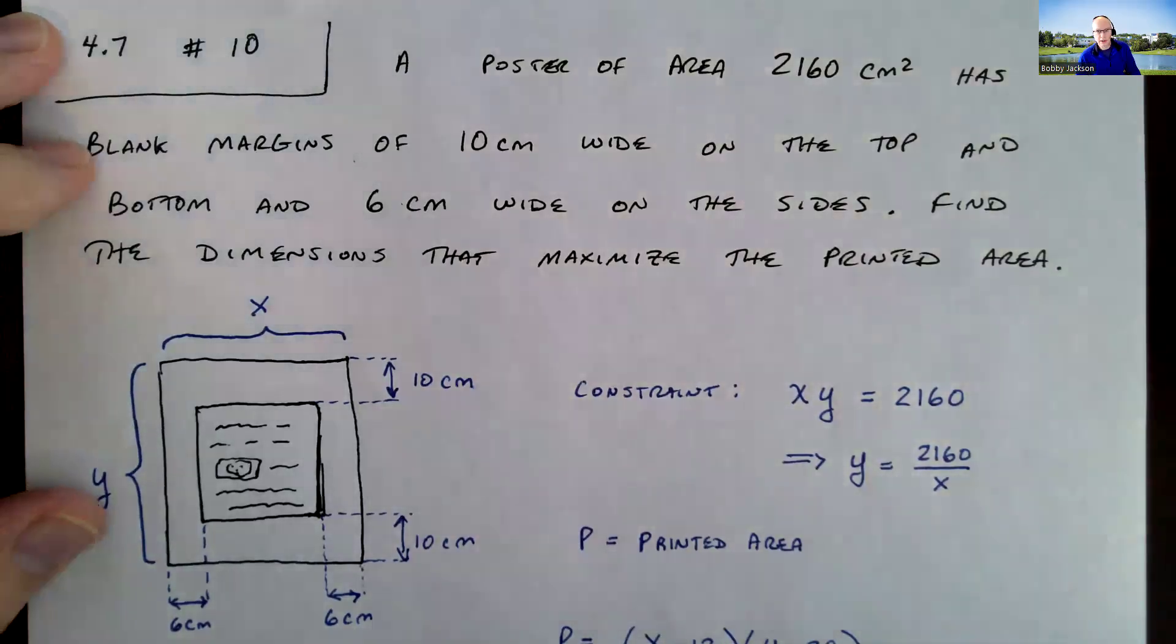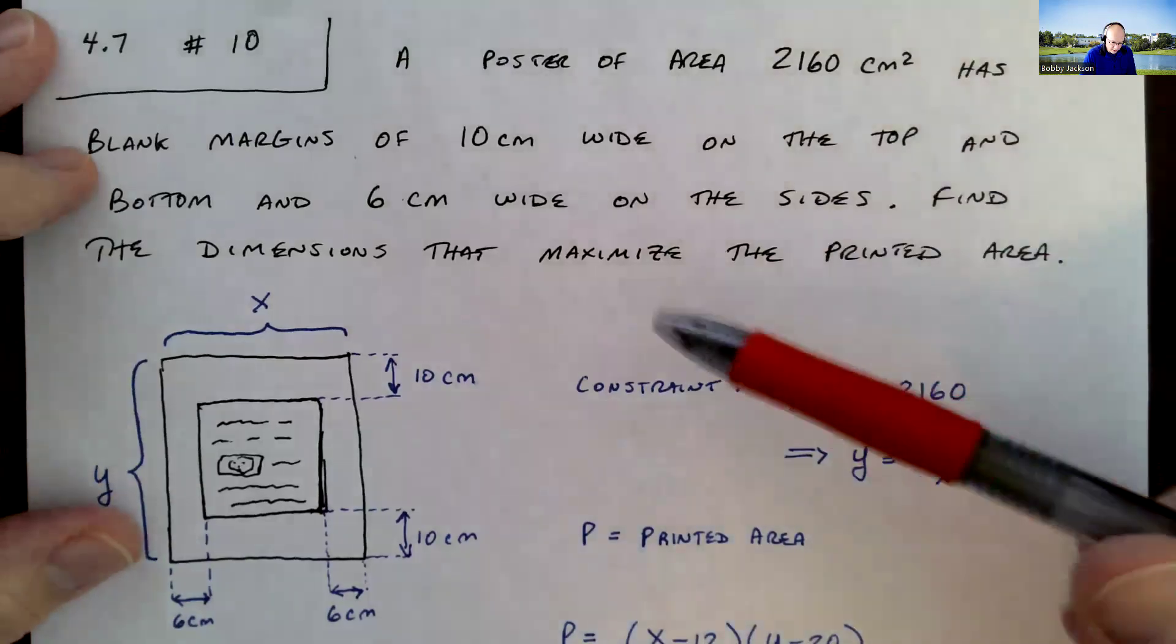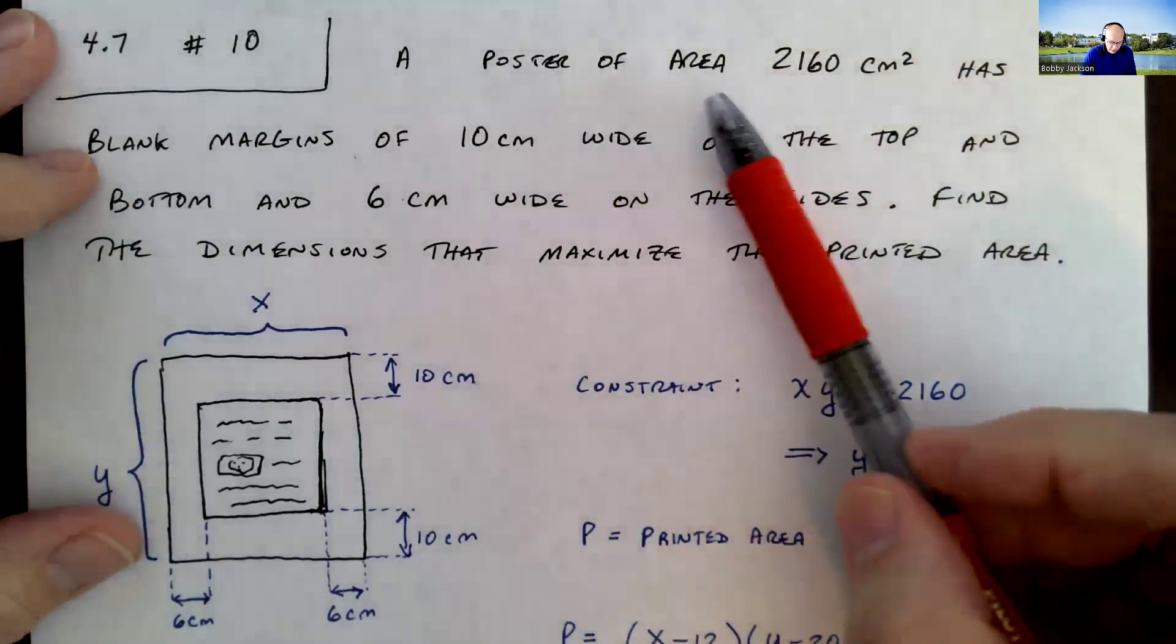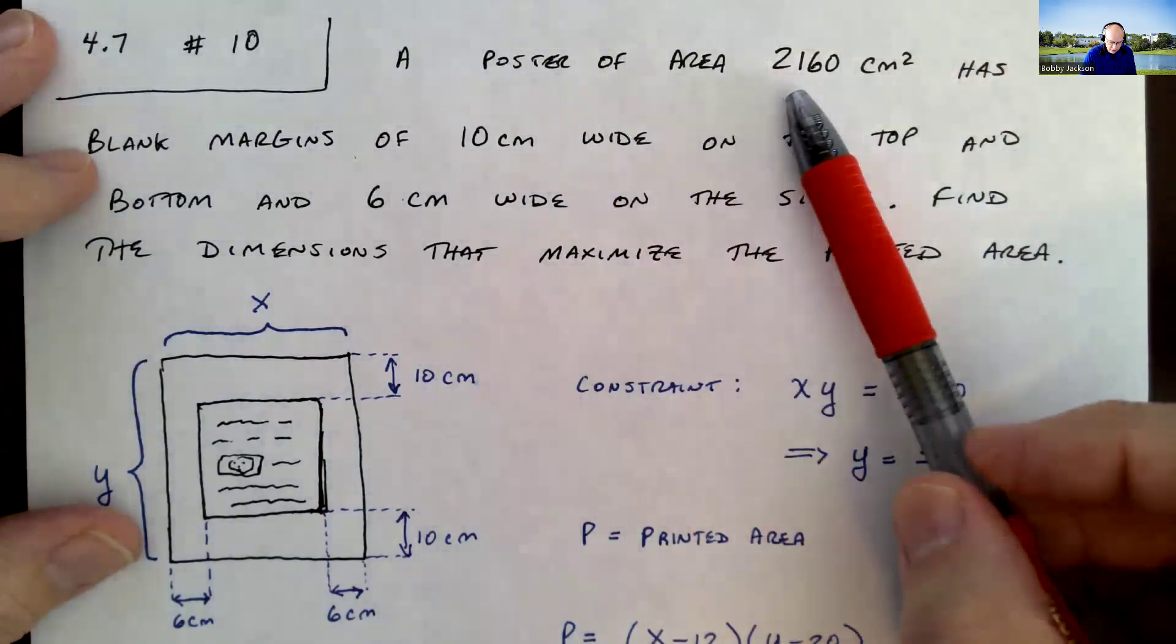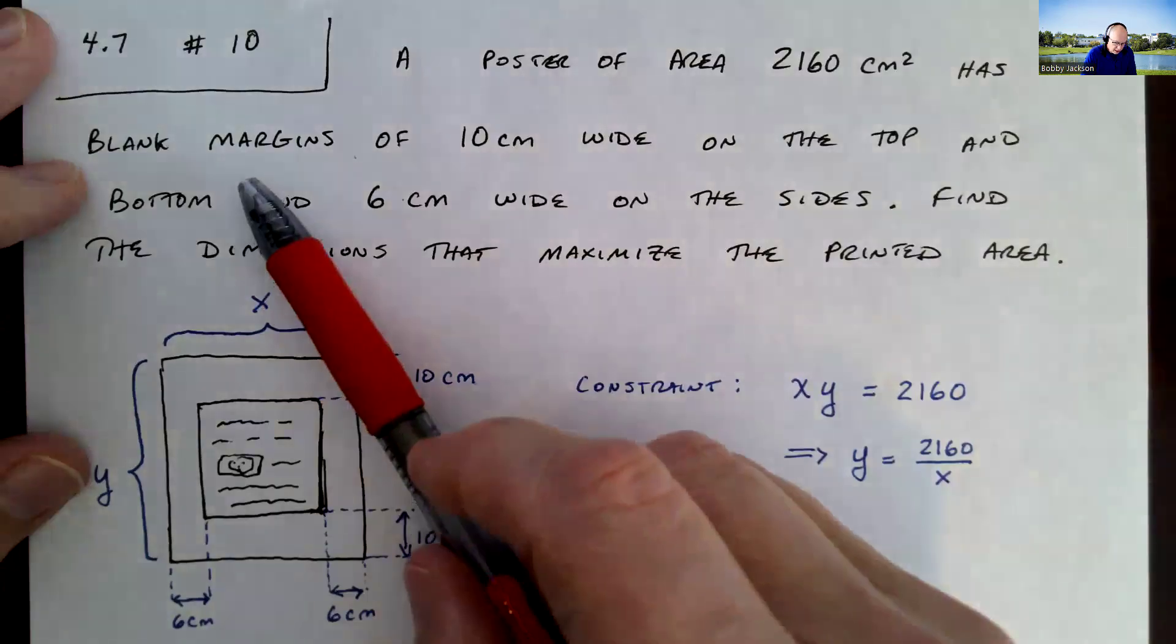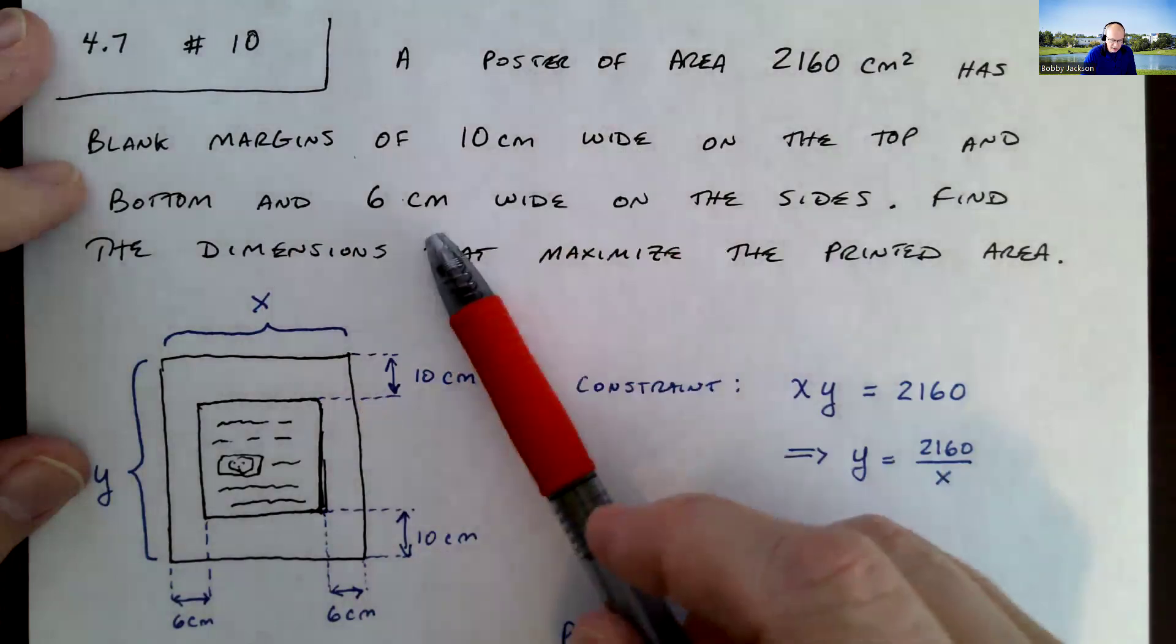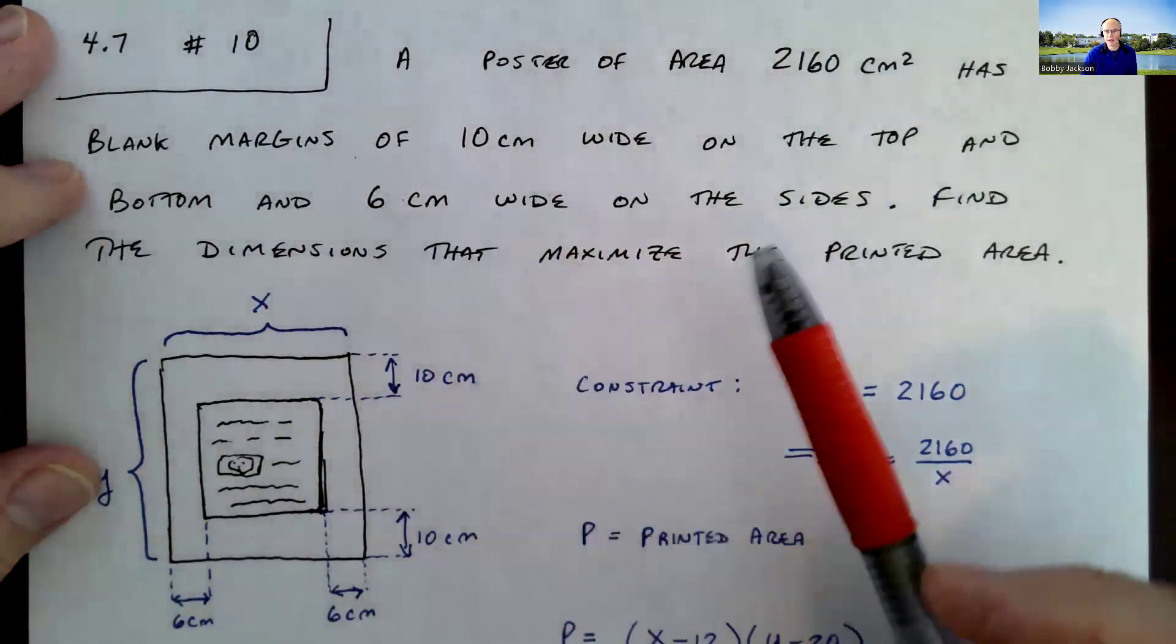Hey everyone, let's look at number 10 in section 4.7, an interesting little problem here. We've got a poster of area 2,160 square centimeters. It's going to have blank margins of 10 centimeters wide on the top and bottom and 6 centimeters wide on the sides.